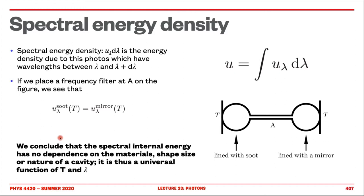The big conclusion is that the spectral internal energy — when we say spectral, that means we have resolution on the wavelength or frequency — has no dependence on the material. Shape, size, and nature of the cavity make no difference; it is thus a universal function of T and lambda. Those functions only depend on the temperature and the wavelength. This is already a big deal, and we are going to find what it is. It's also important because observing spectral energy density gives you information on the temperature distribution and how temperature changes, for example with time.